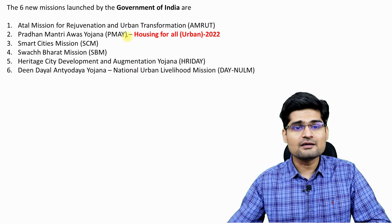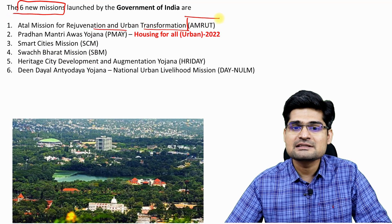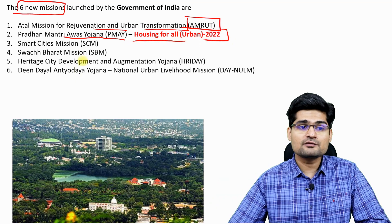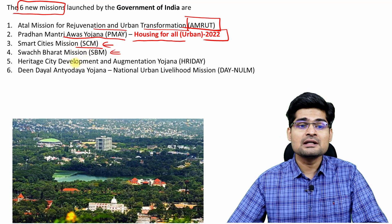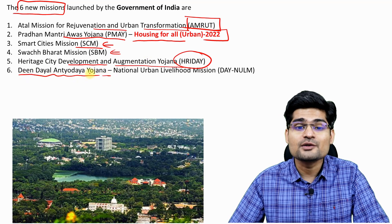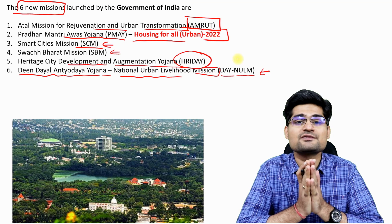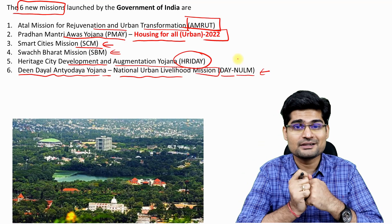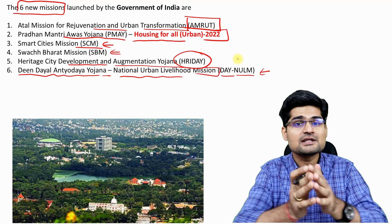In India, there are six new missions running to address these challenges: the Atal Mission for Rejuvenation and Urban Transformation (AMRUT), Pradhan Mantri Avas Yojana for housing for all by 2022, Smart Cities Mission, Swachh Bharat Mission, Heritage City Development and Augmentation Yojana (Hridaya), and Deen Dayal Antyodaya Yojana — the National Urban Livelihood Mission (DAY-NULM). These six major programs are running across the country to make our future livable, sustainable, and carbon neutral.